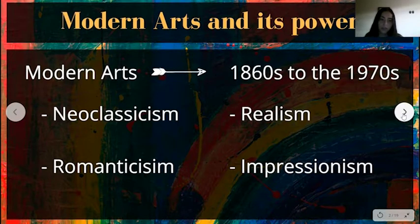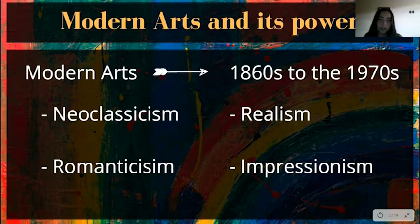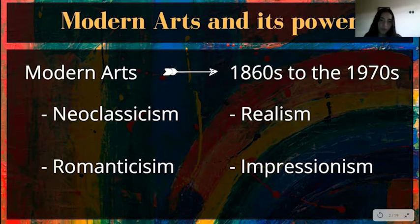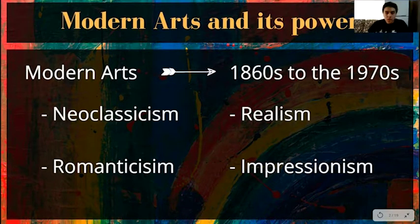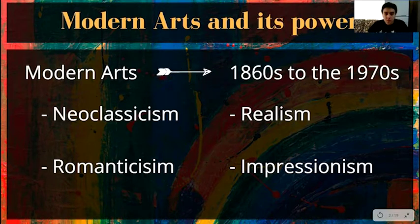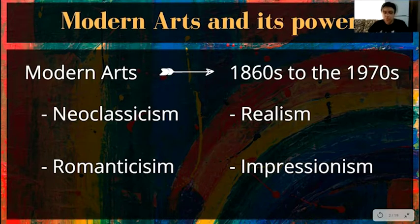Modern arts and its power was one of the main topics we studied throughout this last term. Modern arts includes artistic work produced during the 1860s to the 1970s. Since it is a bit more than a century of arts, we covered the main artistic movements: Neoclassicism, Romanticism, Realism, and Impressionism.